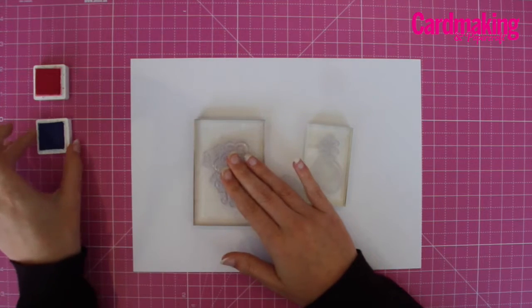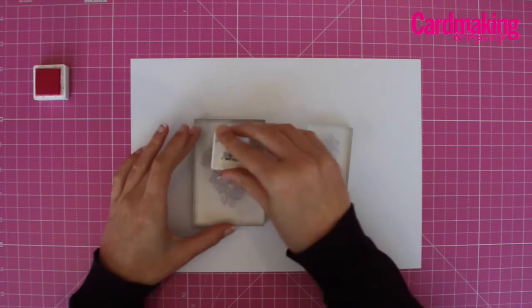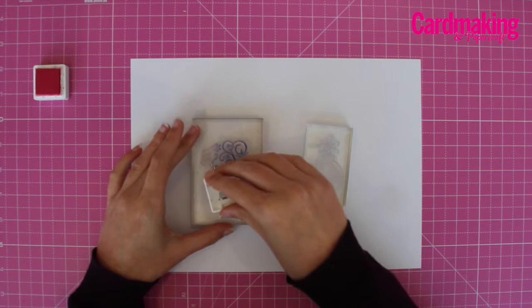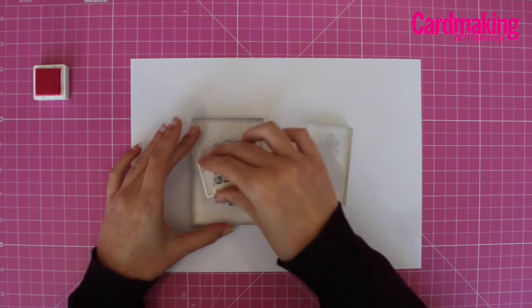Apply a dark colored ink to the pattern stamp. I'm using a pigment ink because it's slow drying, which you'll need for this technique.